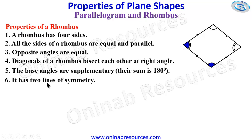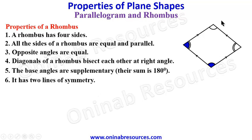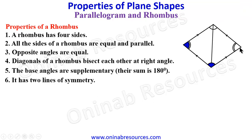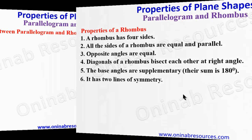And last but not least, a rhombus has two lines of symmetry. The diagonals are the lines of symmetry — so we have the first diagonal and the second. That's all for the properties of a rhombus.